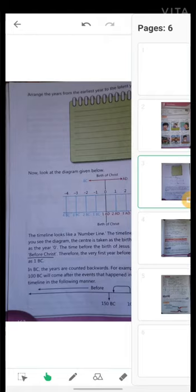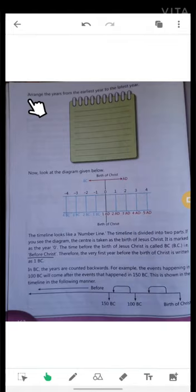Now arrange the years from the earliest year to the latest year. Look at the diagram given below. Birth of Christ, BC, AD. It's the birth of Christ. Before is BC, before the birth of Christ, and after is the AD period.